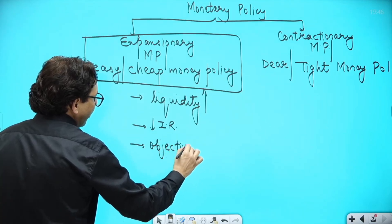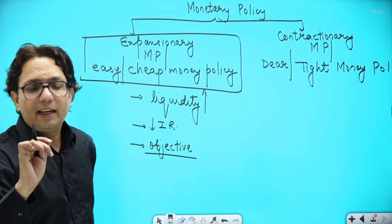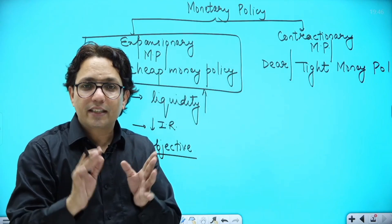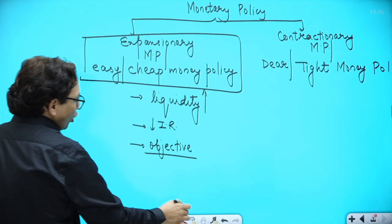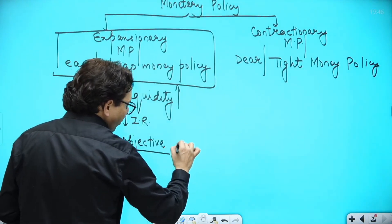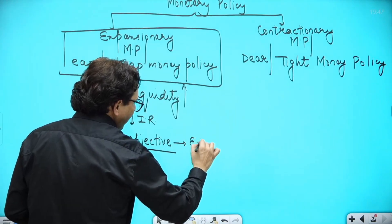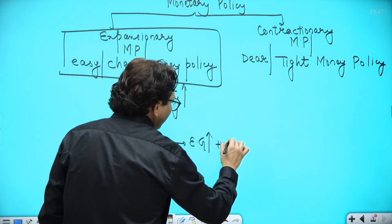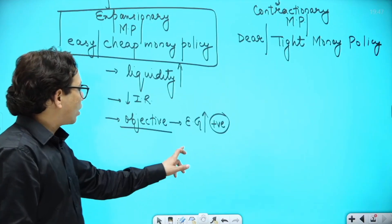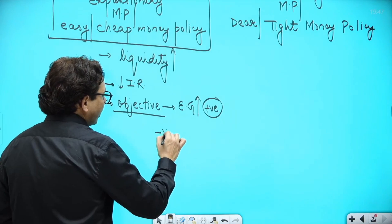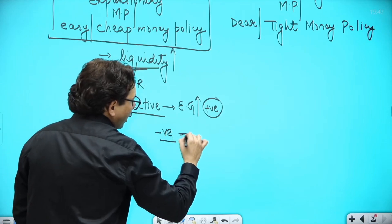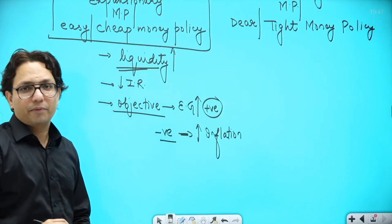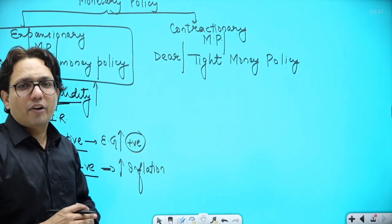When I say monetary policy, it is always the RBI; when I say fiscal policy, it is always the government. Fiscal policy involves taxes; monetary policy involves interest rates. The objective when RBI follows expansionary monetary policy is to increase economic growth, and that is the positive of this policy. The negative is that the increased liquidity will contribute to increased inflation in the long term.